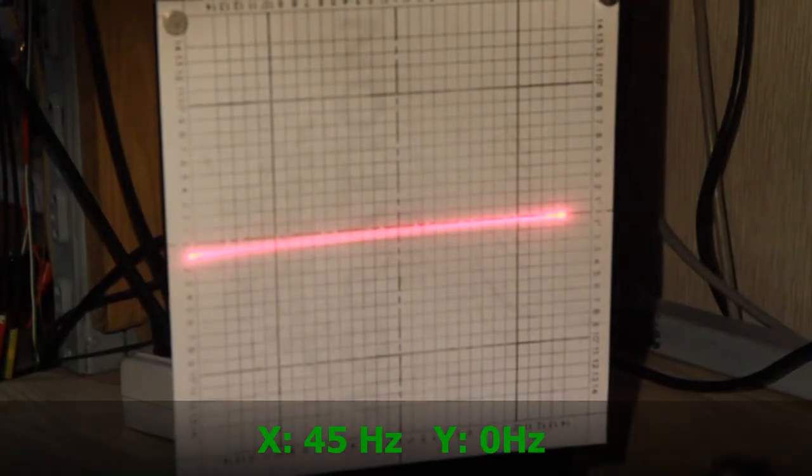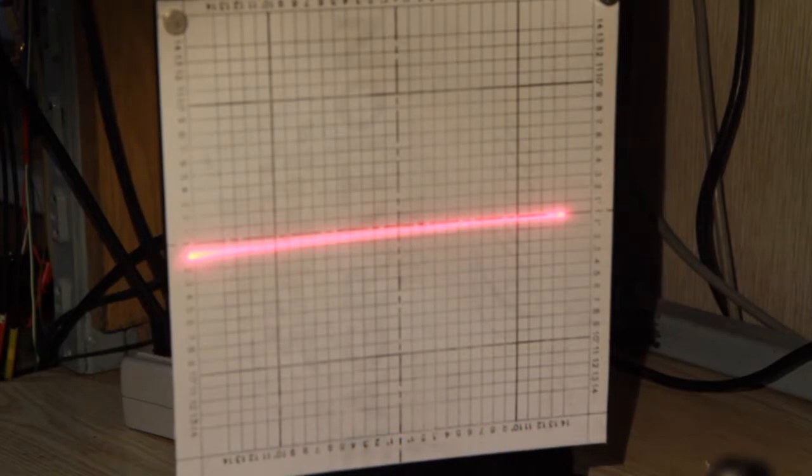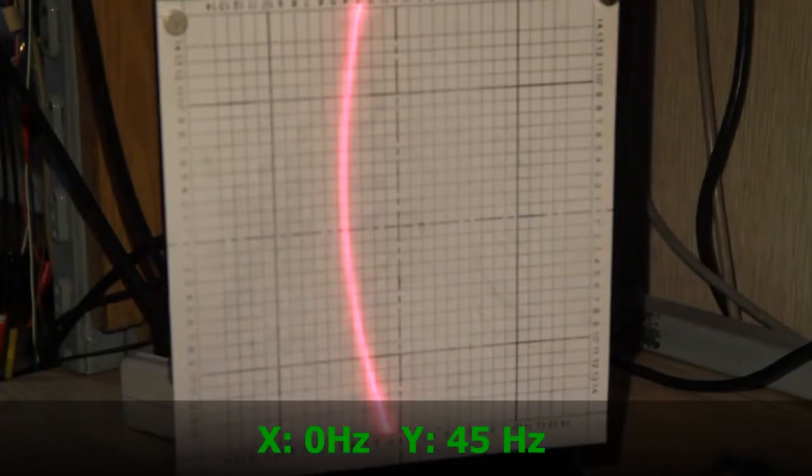Only the X control signal is applied. The grid line pitch corresponds to a deflection angle of 1 degree.